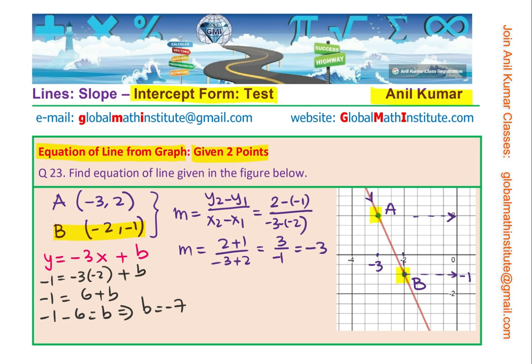Now we have found the value of B as minus 7. The equation of the line, as you know, is y equals to mx plus B. And the value of B is minus 7, slope already we got it as minus 3. And so we have our equation and the equation is y equals to minus 3x minus 7. So that becomes the equation of the given line.